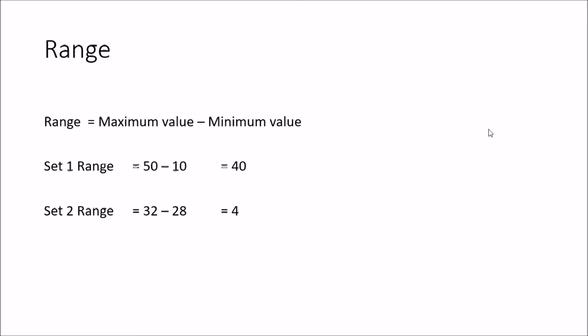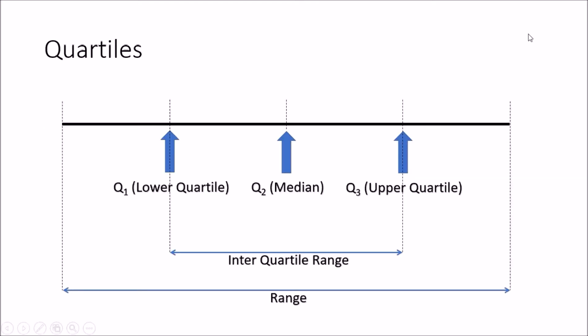Next we will look at the quartiles and the interquartile range. The median is the middle value of the data set. Quartile 1, or the lower quartile, is the one-fourth value of the data set, and Quartile 3, or Q3, also called the upper quartile, is the three-fourth value. In the diagram, the median is in the middle, Q1 is the one-fourth value, Q3 is the three-fourth value, and the difference between Q3 and Q1 is called the interquartile range.